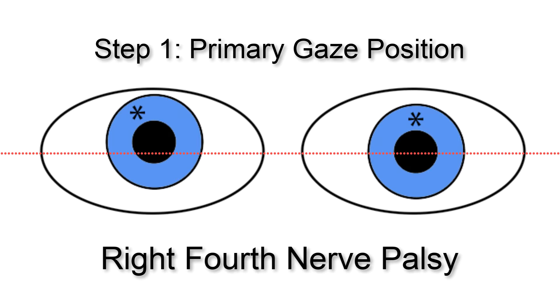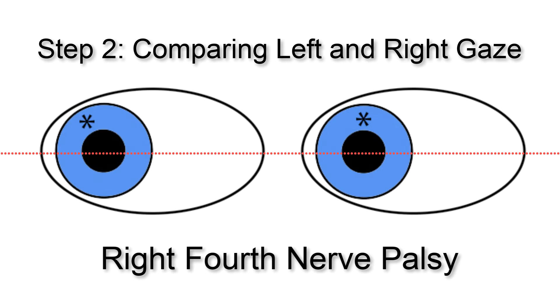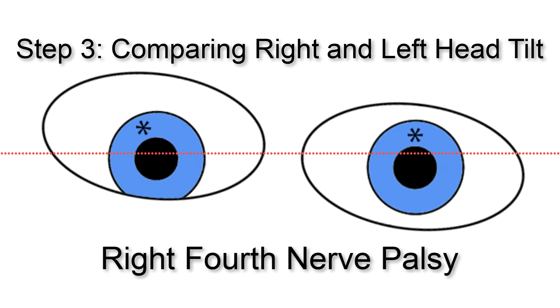To review, step one: right hypertropia in primary gaze position. Step two: right hypertropia greater in left than right gaze. Step three: right hypertropia worse in right head tilt than in left head tilt. The third nerve palsy in this patient was caused by head trauma.